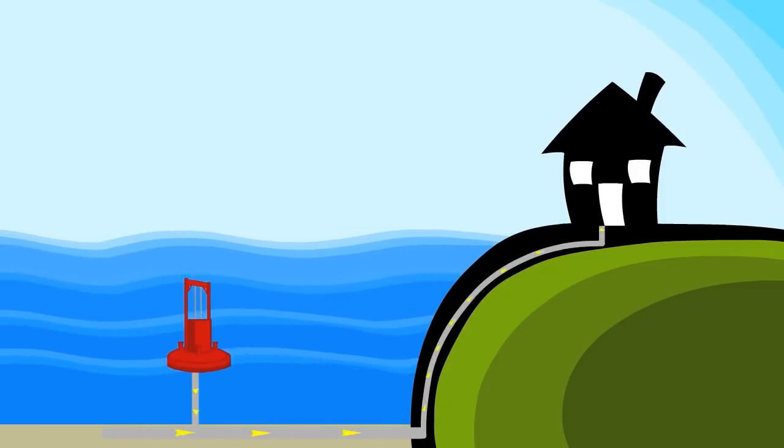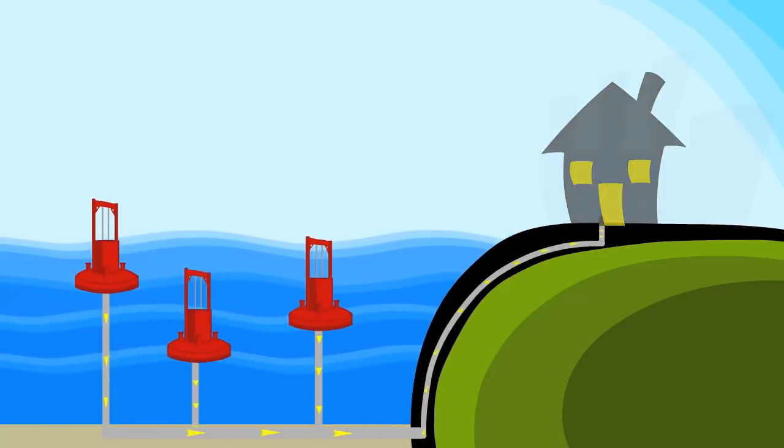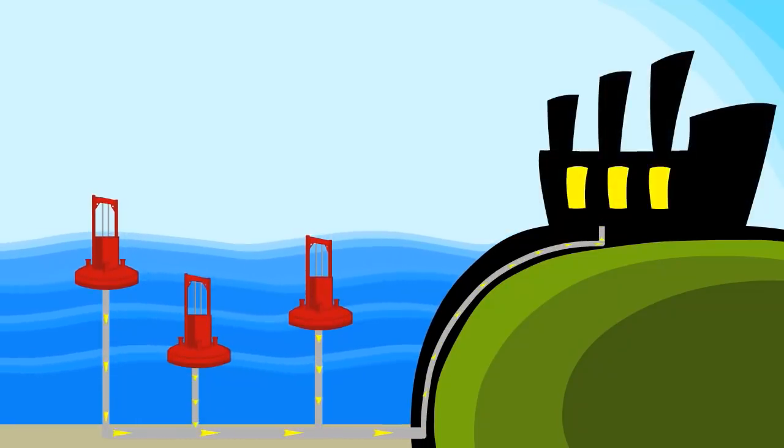A single unit can generate enough power for 40 homes. The next generation is predicted to generate four times that amount. Put them together on a farm, and a power plant is born.